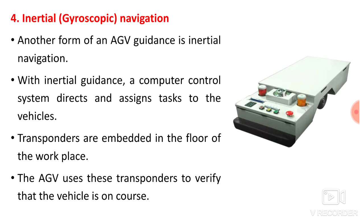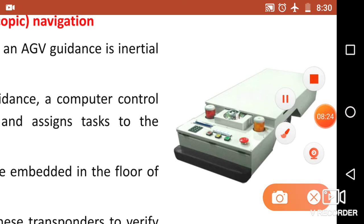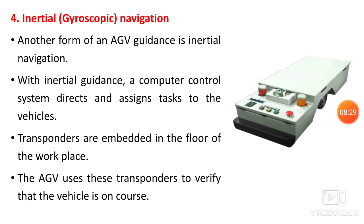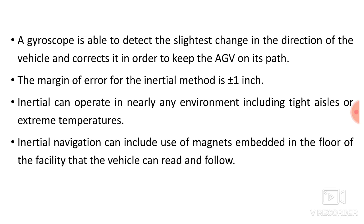The fourth technique is gyroscopic navigation, also called inertial navigation. A computer control system directs and assigns tasks to the vehicle. A gyroscope is mounted over the AGV. Transponders are also embedded in the floor of the workplace, and the AGV uses these transponders to verify it is on course. A gyroscope is able to detect the slightest change in direction of the vehicle and corrects it to keep the AGV on its path.